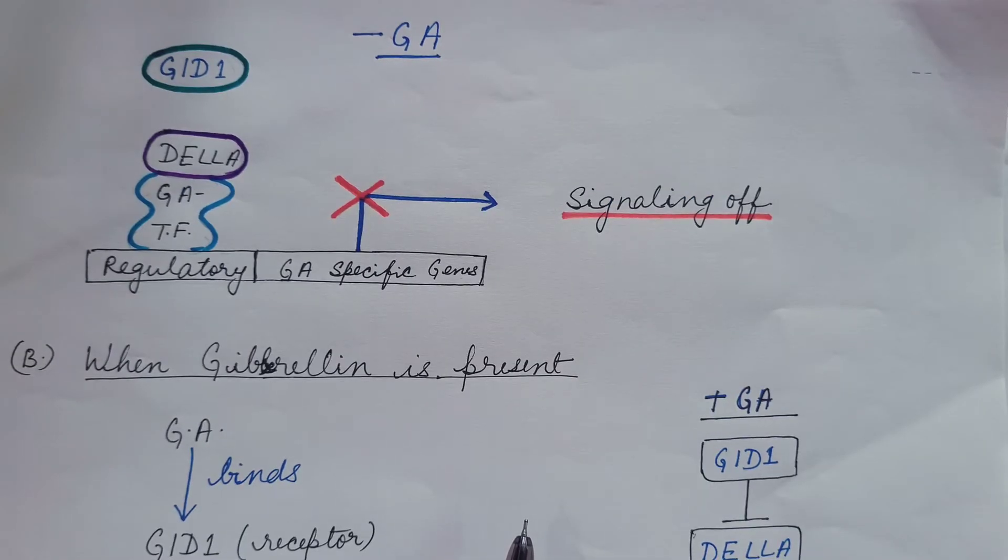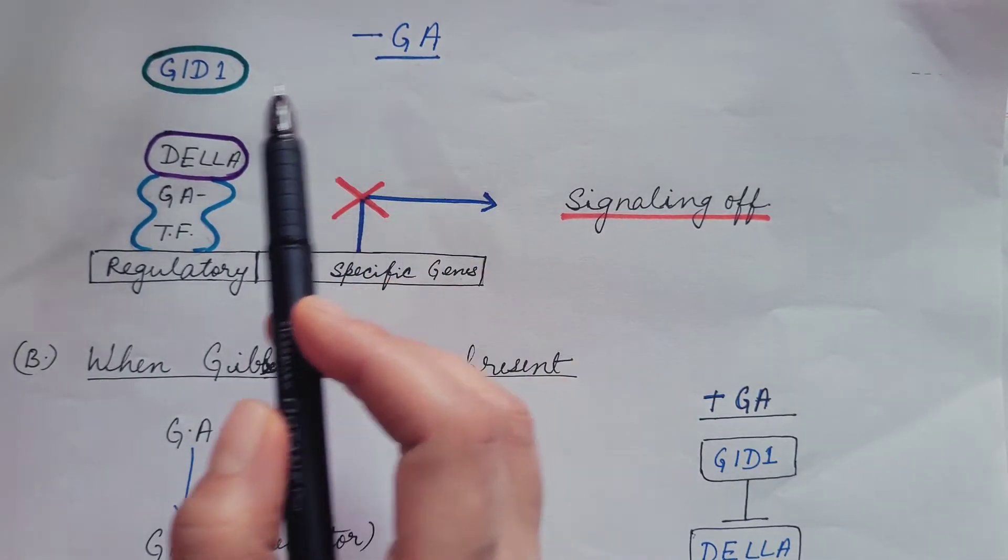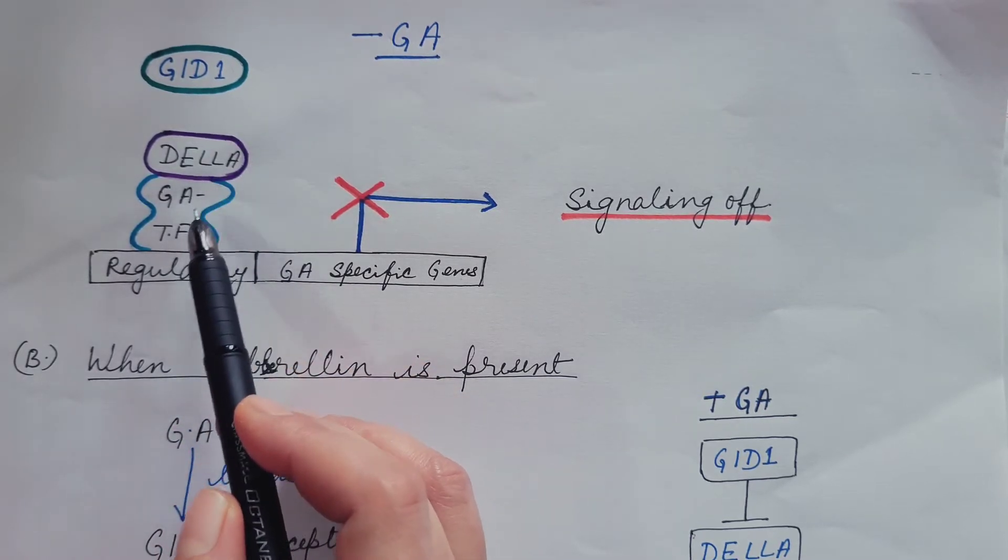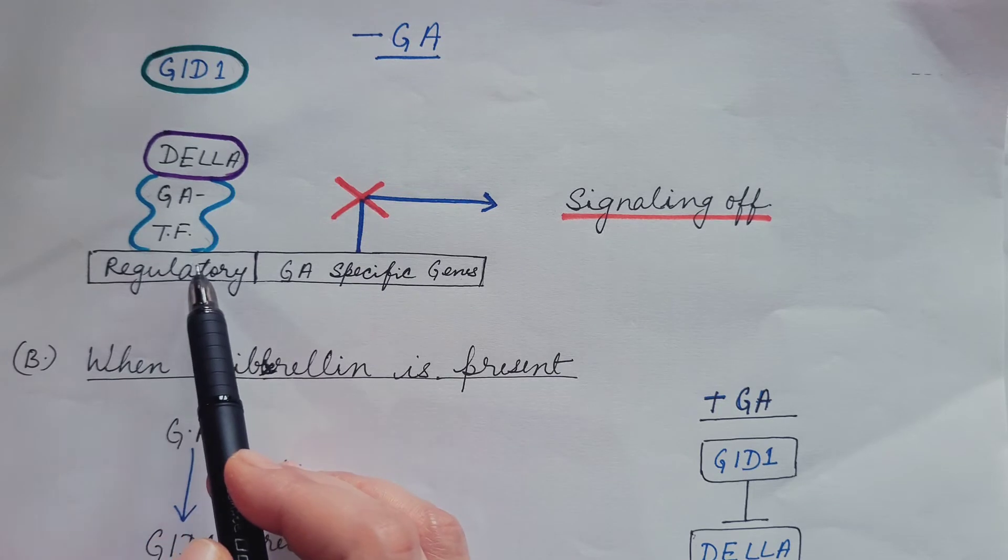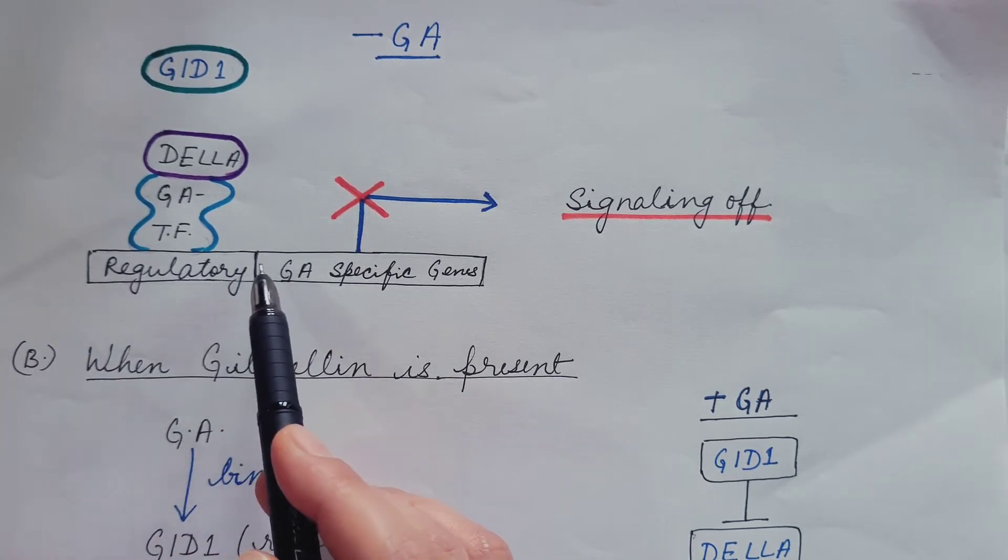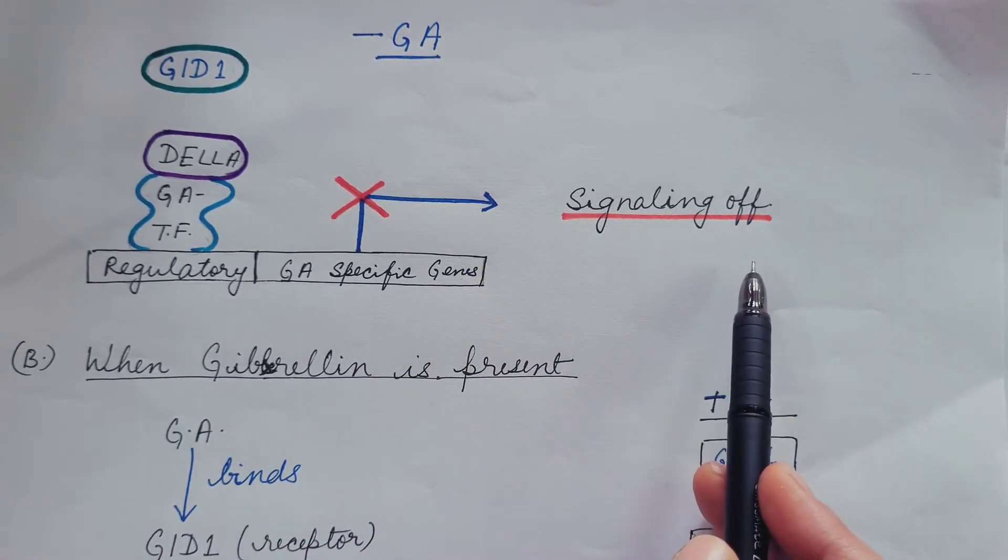So signaling is off. Let us understand this with the help of a figure. Gibberellin is absent. No gibberellin binds with receptor. Hence, this DELLA protein binds with the transcription factor. This transcription factor is not able to transcribe genes and hence we say signaling is off.